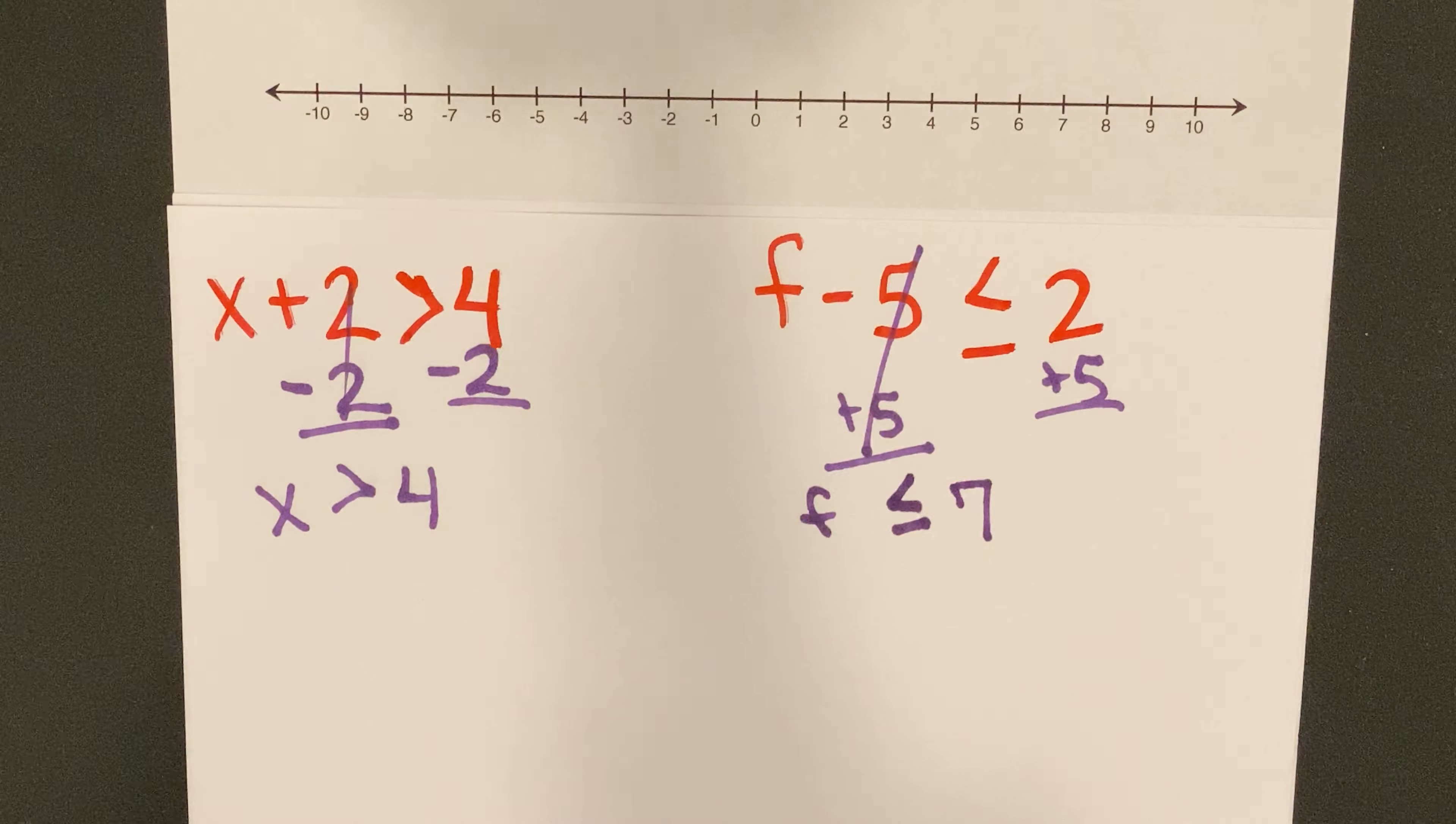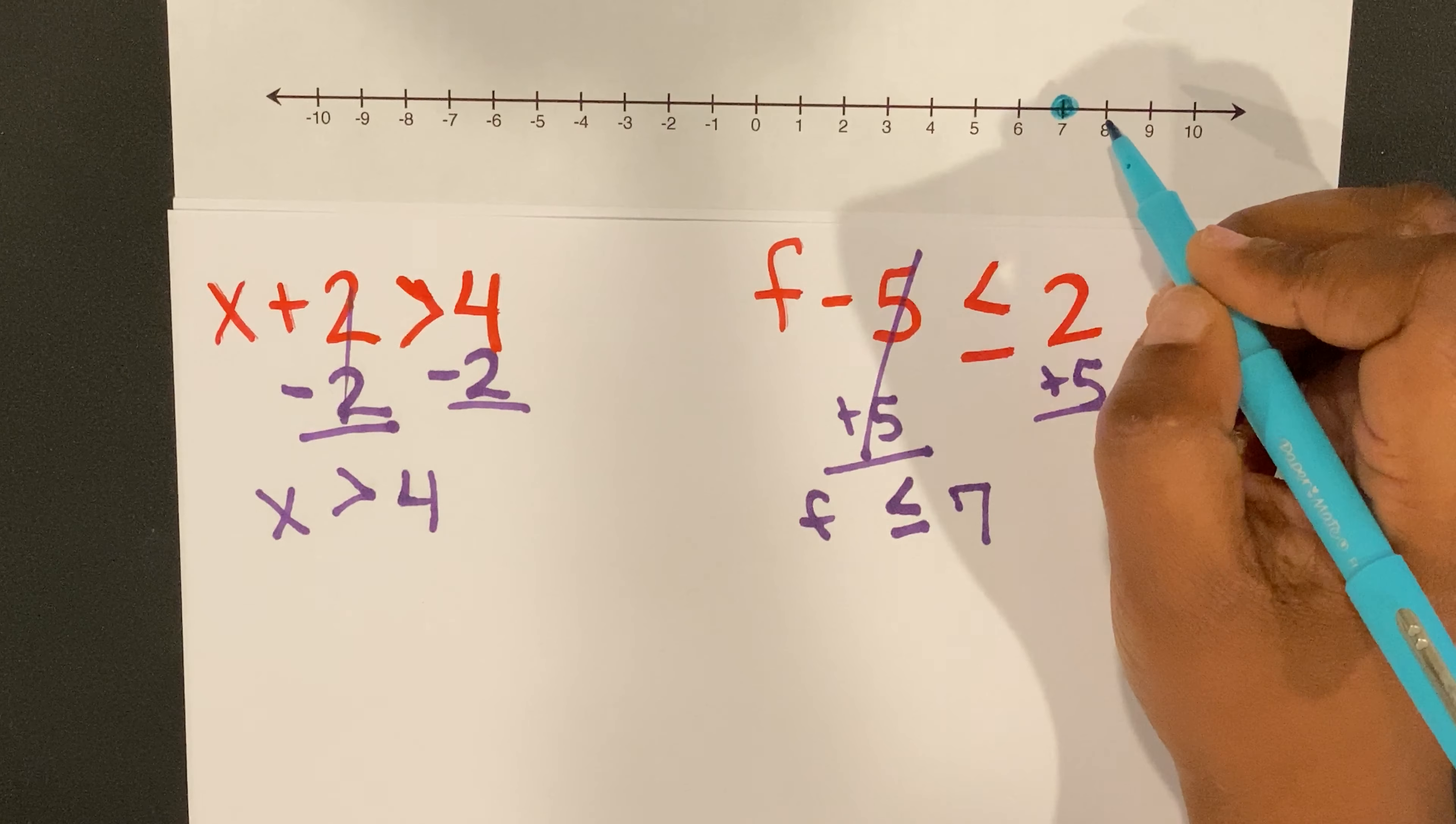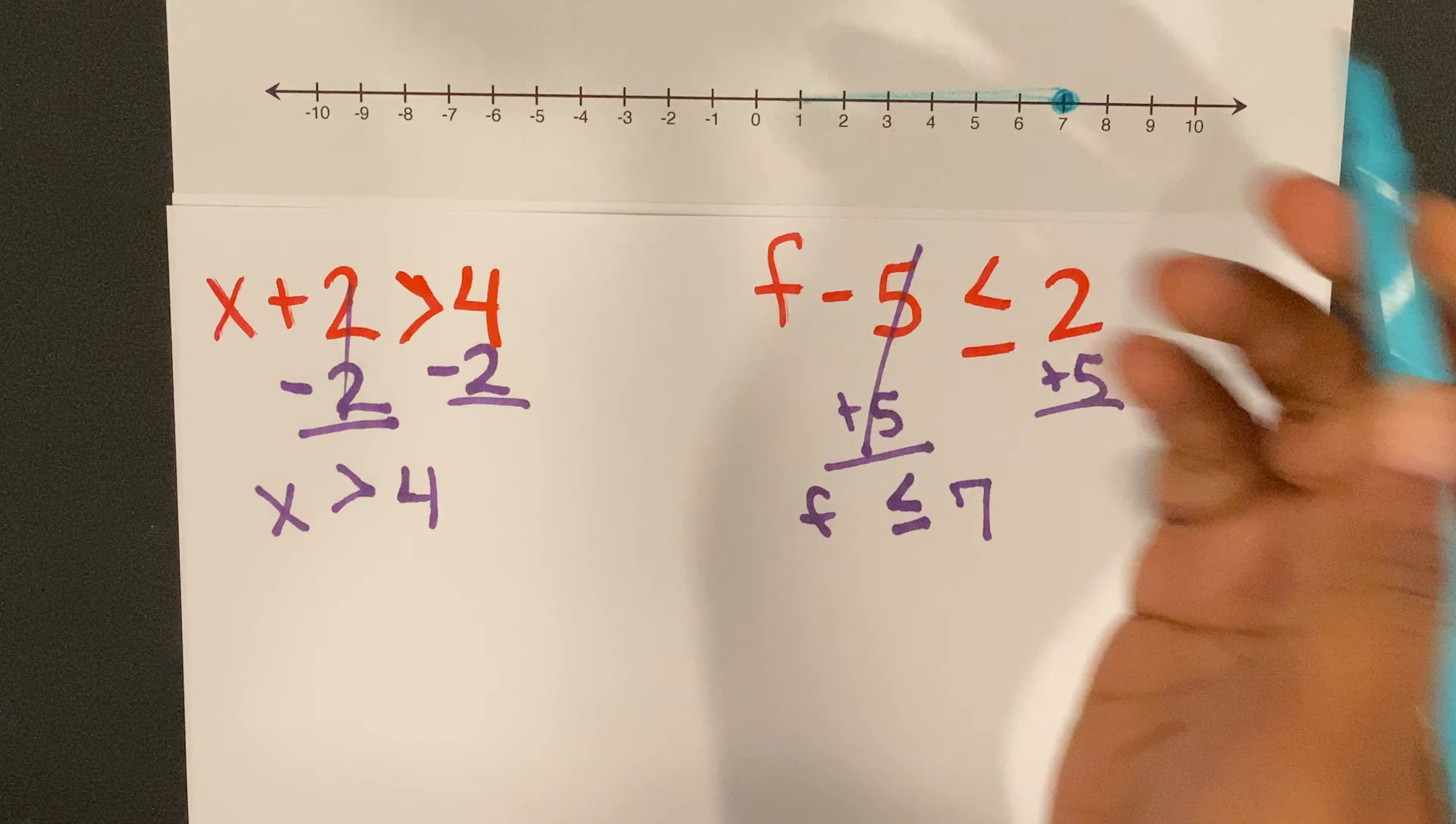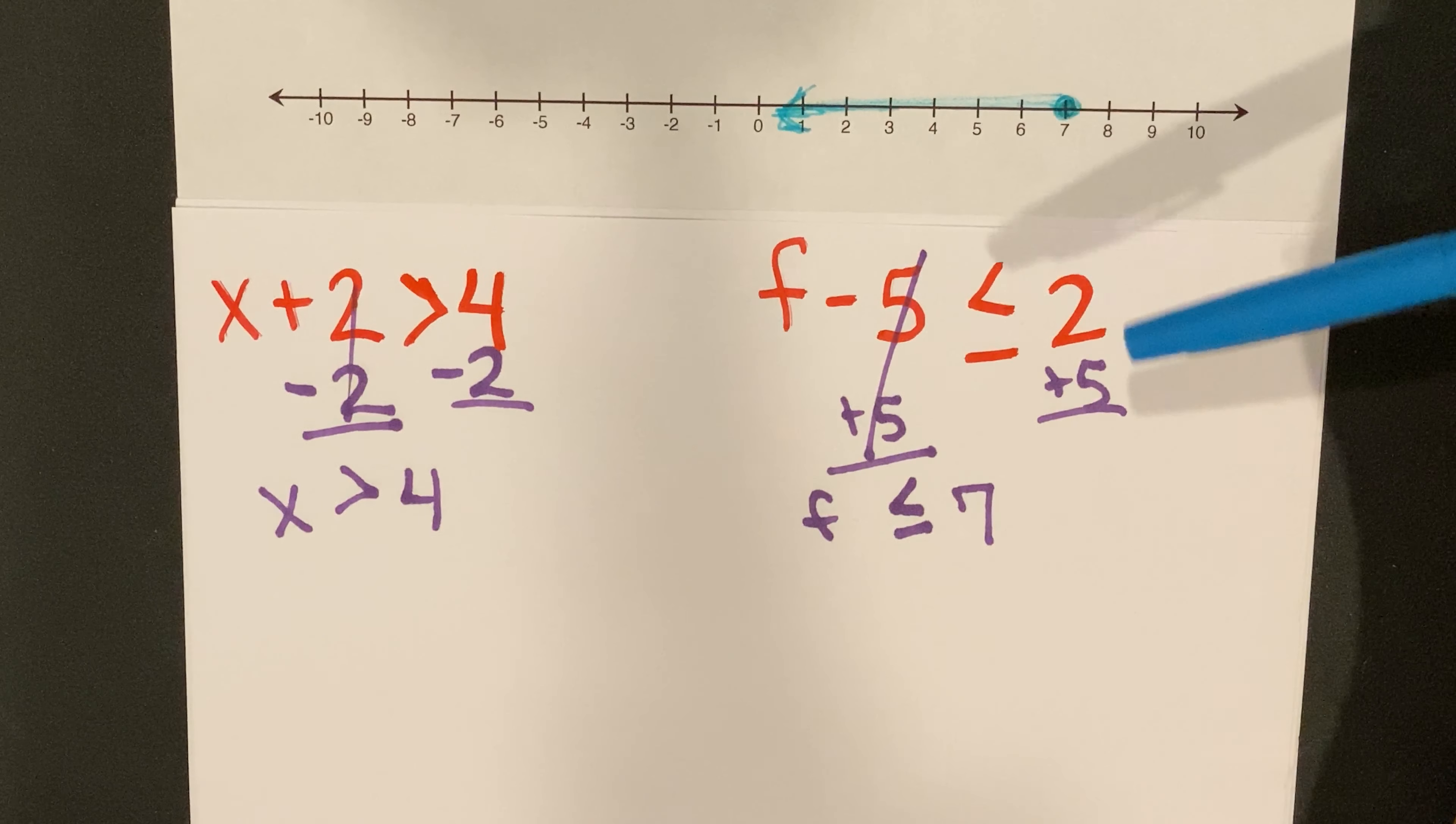So then I'm going to go to seven and I'm going to fill it in. Remember that equal to means that you need to fill it in. And then what did I say? Is less than, correct. Less than means everything on this side of the number line, all the way down forever to infinity and beyond. Do you see the difference? My open means it's not included, my closed means it's included.